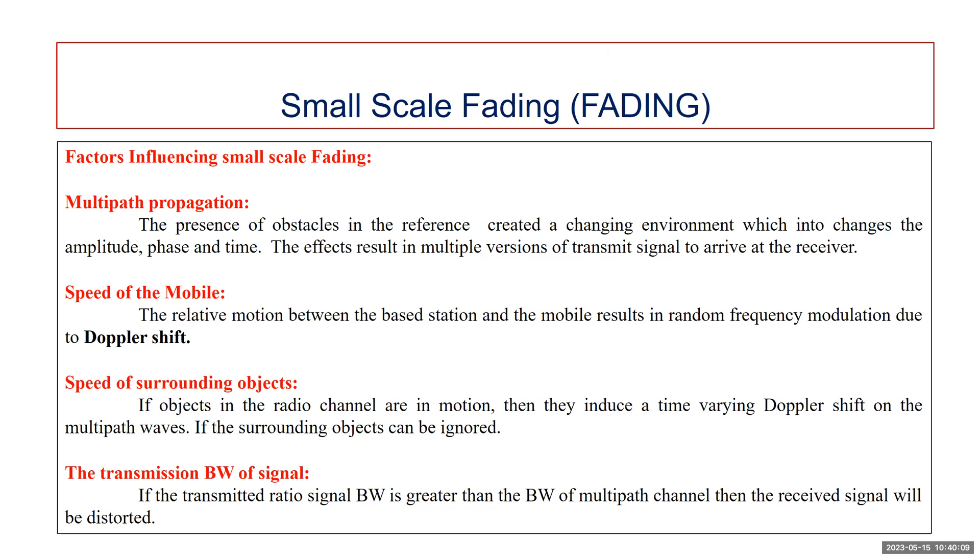The second factor is the speed of the mobile. The relative motion between the base station and mobile results in random frequency modulation due to the Doppler shift. The Doppler shift is positive or negative depending on whether the mobile receiver is moving toward or away from the base station.